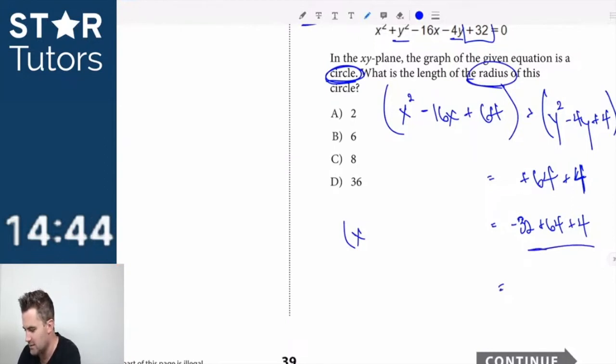Negative 32 plus 64 is 32, plus 4 is 36, and this is equal to r squared if you guys remember the circle equation. So r is equal to 6.